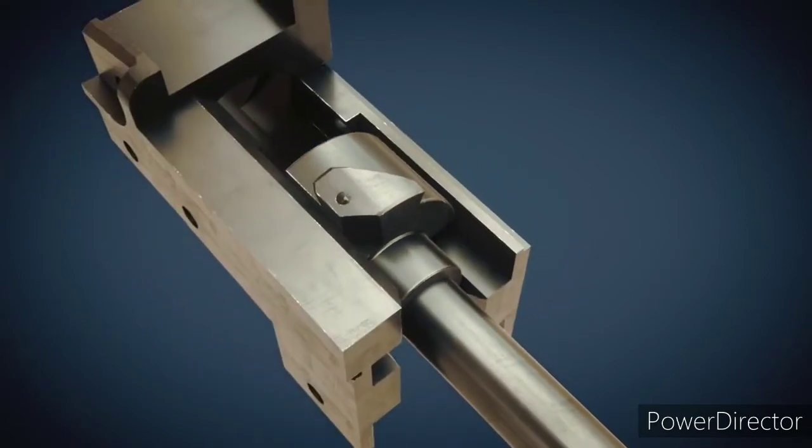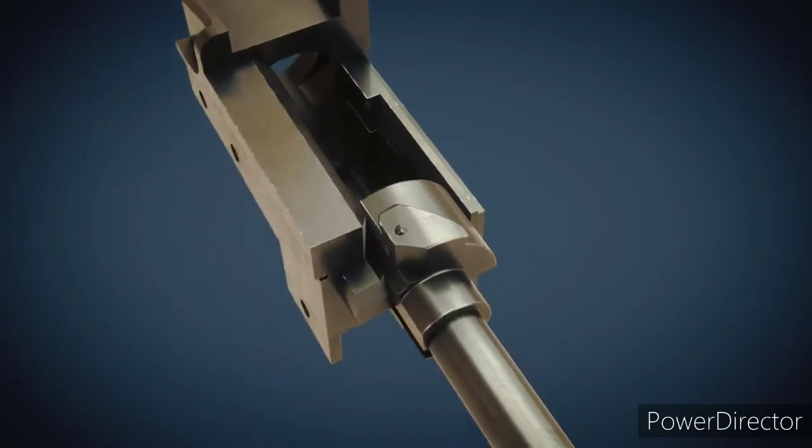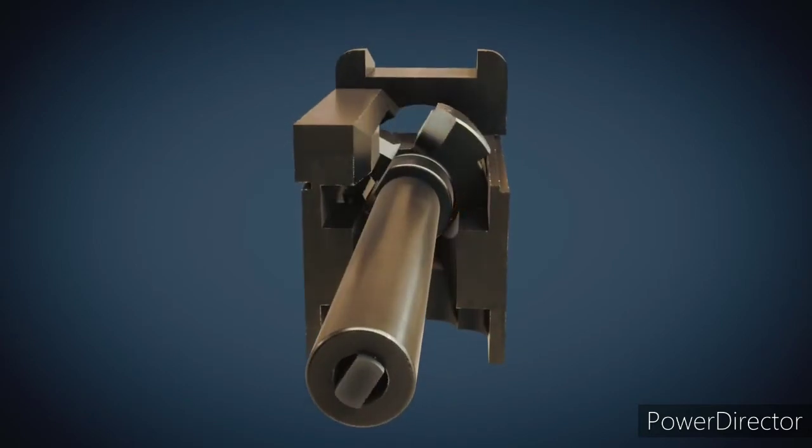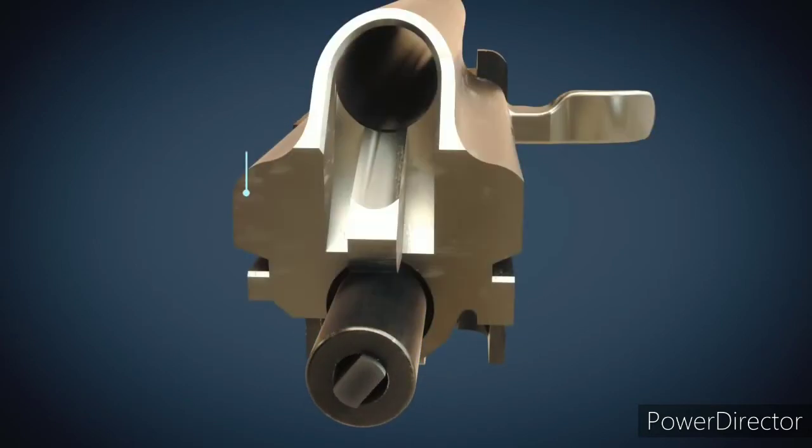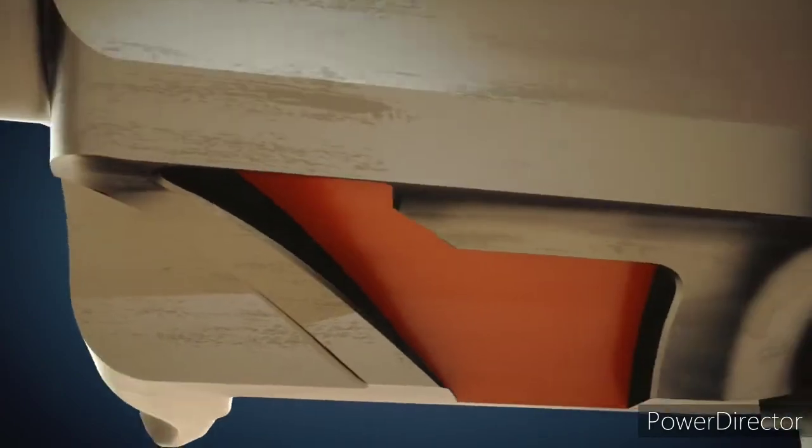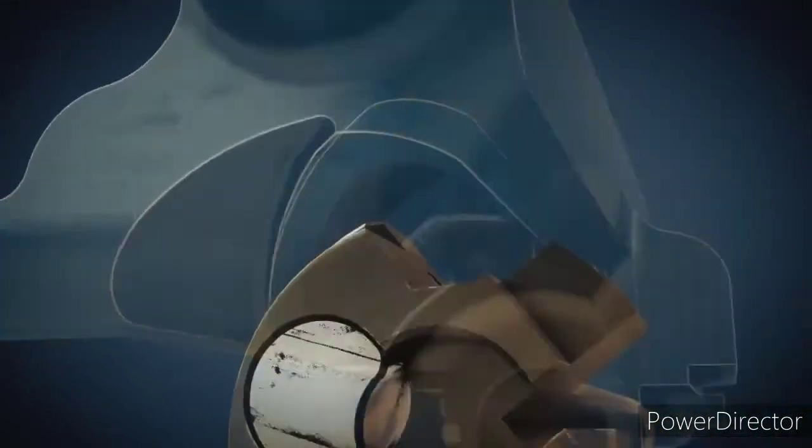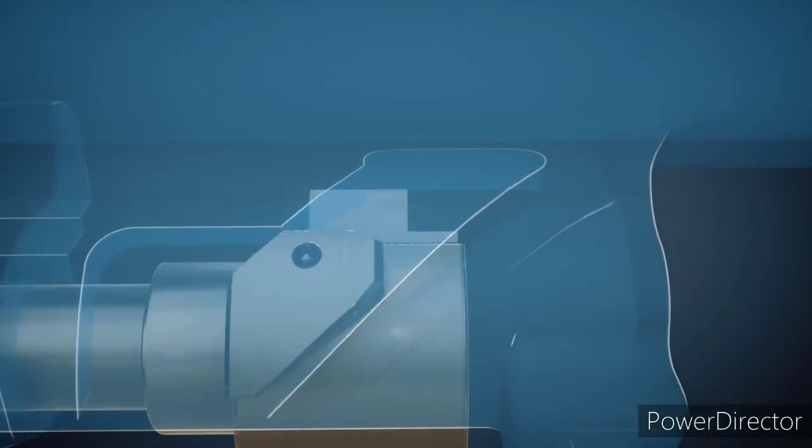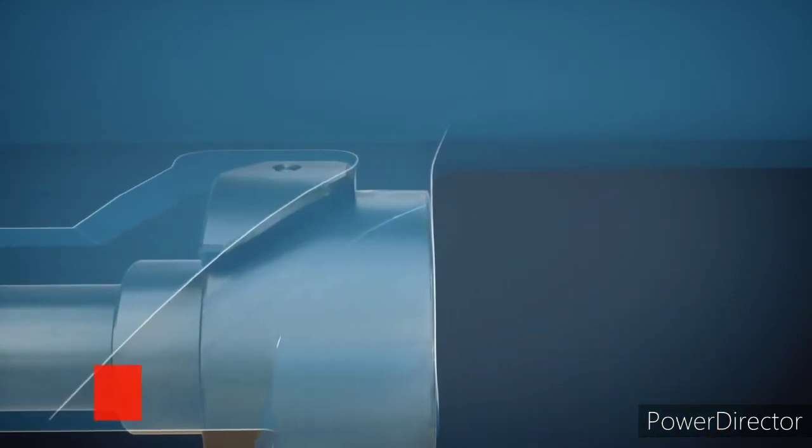When the bolt rotates, it is unlocked so that it can slide back and forth. The bolt is rotated through the cam guide machined into the underside of the bolt carrier, marked red here. As soon as the bolt carrier moves, the bolt rotates.